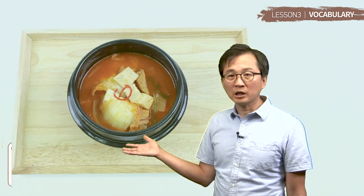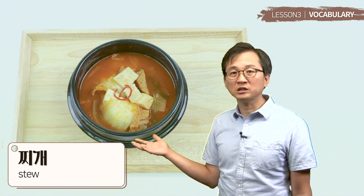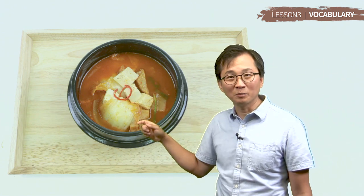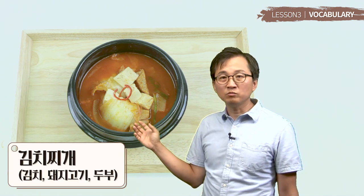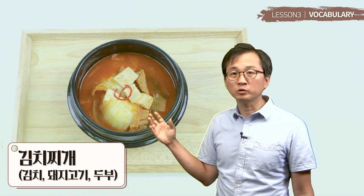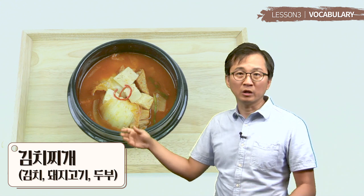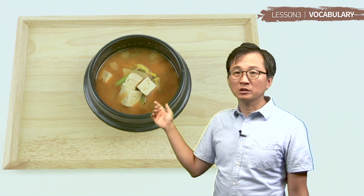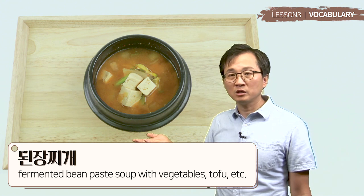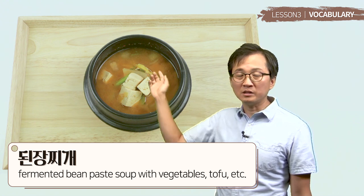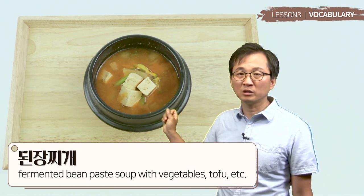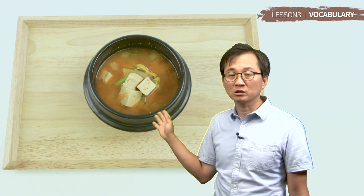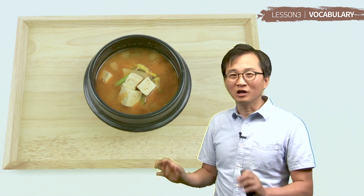그 다음에 이거는 type of 찌개 그러네요. 찌개는 stew style food. Can you see kimchi here? It's a little bit red. 김치찌개 그렇거든요. 김치하고 그 다음에 보통 돼지고기를 많이 넣어요. They put pork with 김치. 여기 두부도 있네요. 두부는 tofu. 그 다음에 이거는 된장찌개네요. 된장 그러면 fermented bean paste. This base soup is made with fermented bean paste. 된장. You put vegetables and 두부 넣고. 김치찌개, 된장찌개, they are very popular Korean foods.